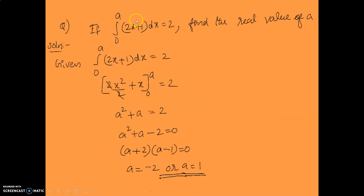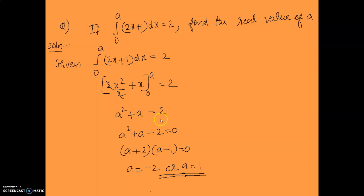Next question: if integral 0 to a of (2x plus 1) dx equals 2, find the real value of a. Integrating: 2x square upon 2 plus x from 0 to a equals 2. Cancelling the 2's: x square plus x from 0 to a equals 2. Applying the upper limit: a square plus a equals 2, so a square plus a minus 2 equals 0. Factorizing: (a plus 2)(a minus 1) equals 0, giving a equals minus 2 or a equals 1.